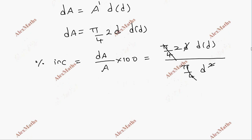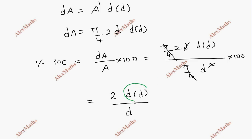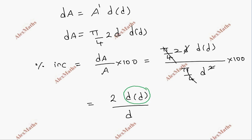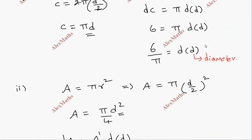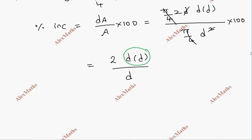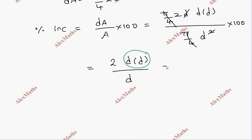After simplification, the d squared and π by 4 terms cancel, leaving 2 times dd divided by d, multiplied by 100. The differential of diameter dd is 6 divided by π, so substituting: 2 times 6 by π, whole divided by the diameter d.